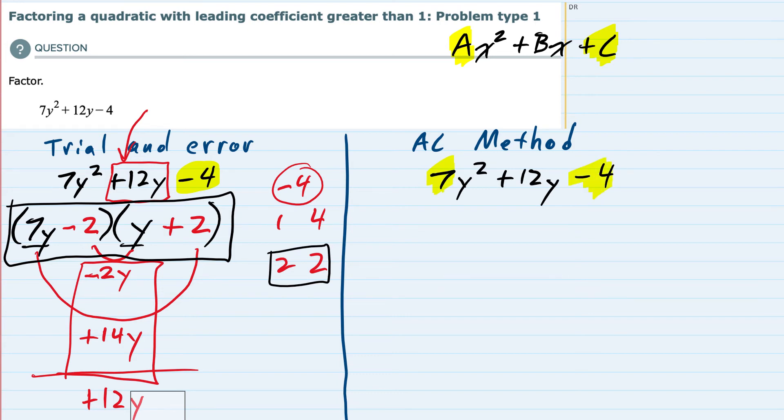Much like the trial and error method, I now have to list out all of the combinations that would give me a -28. So that would either be 1 and 28, 2 and 14, 4 and 7. That covers the possibility here for 28.